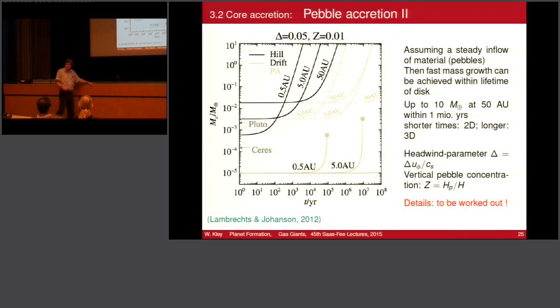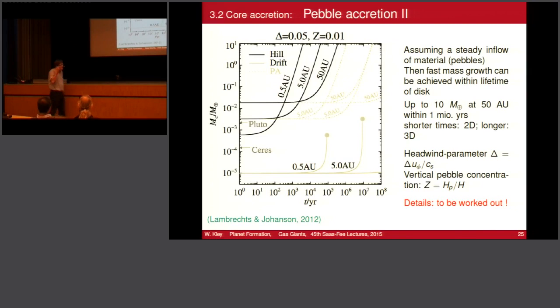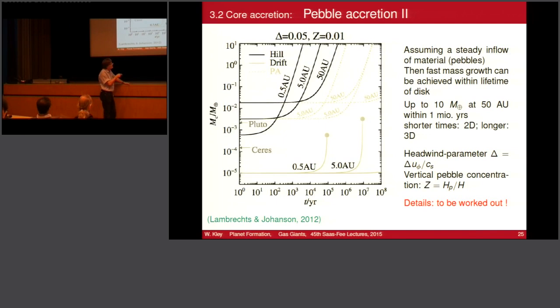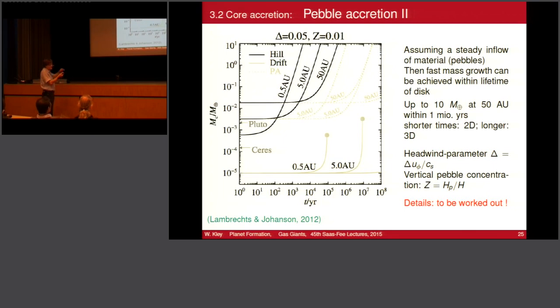The claim by Lambrechts and Johansen is that this mechanism can easily make Uranus and Neptune, and planets at 20–50 AU distance. The key question is how many pebbles are still available. Whether you have a 2D or 3D flow matters: 2D assumes all material concentrated in the mid-plane, leading to higher accretion rates because density is very high in the mid-plane. The details in red still need to be worked out — this paper is from 2012 and is still under active research.